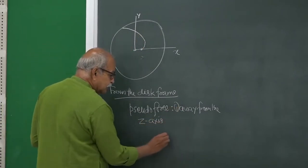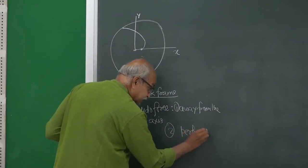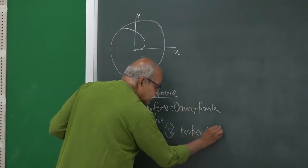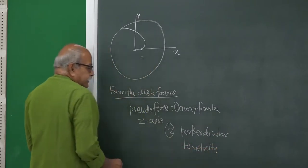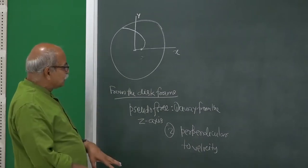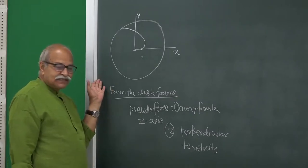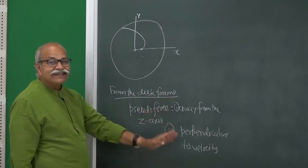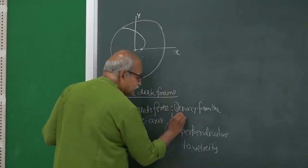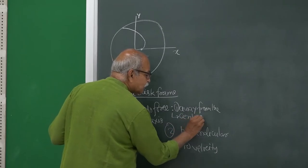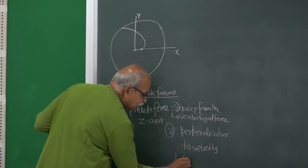So one pseudo force is away from the axis, and the other is a pseudo force which is perpendicular to the velocity — at least a component should be there perpendicular to the velocity. In the rotating frame you do have two pseudo forces. Together with the real forces you have to use at least these two. This one is called centrifugal force, and this one is an example of what we call Coriolis force.